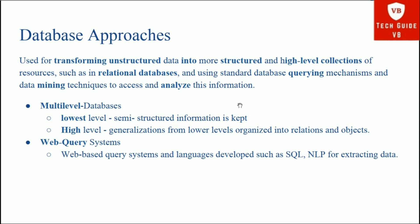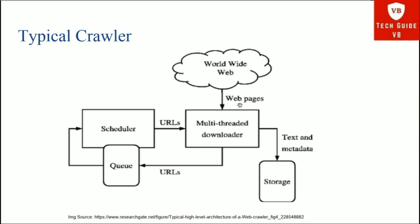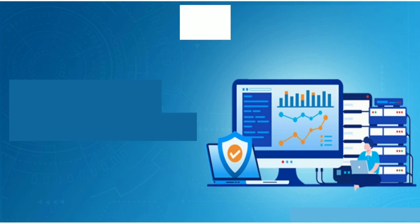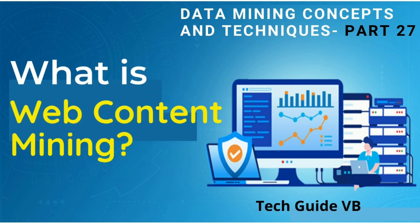The final component is the typical web crawler diagram for the World Wide Web. Web pages on the web are downloaded by a multi-threaded downloader, which feeds into a queue managed by a scheduler. Pages are downloaded one by one using multi-threading and stored in storage — specifically a hard disk or database — as text and metadata.